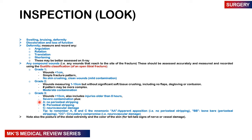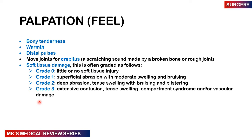Note the posture of the distal extremity and the color of the skin as telltale signs of nerve and vessel damage. On palpation, feel for bony tenderness, warmth, and distal pulses. You may move the joint for crepitus but do not do this just to prove your point — get an X-ray instead. Then grade the soft tissue damage: Grade 0 — little or no soft tissue injury; Grade 1 — superficial abrasion with moderate swelling and bruising; Grade 2 — deep abrasion with tense swelling, bruising, and blistering; Grade 3 — extensive contusion, tissue swelling, compartment syndrome, and vascular damage.